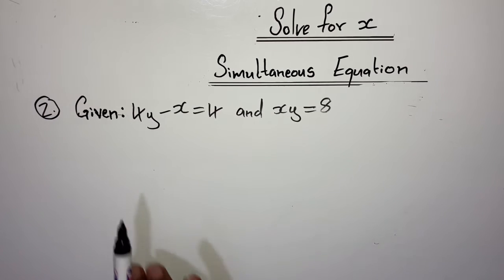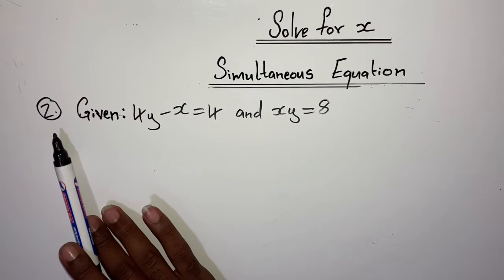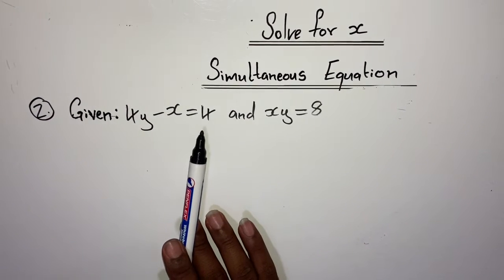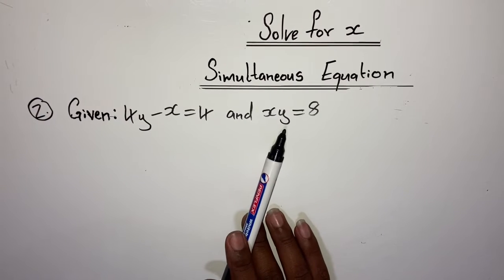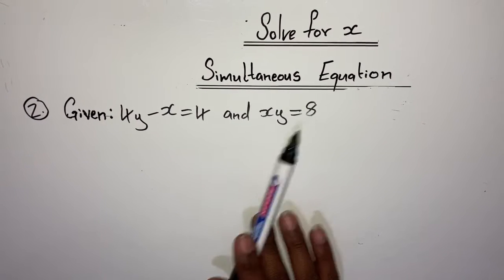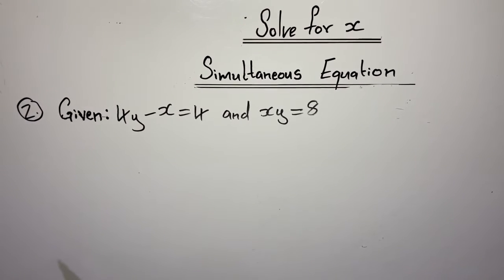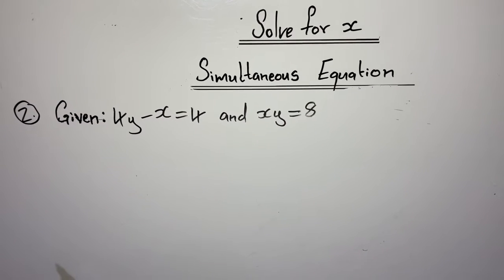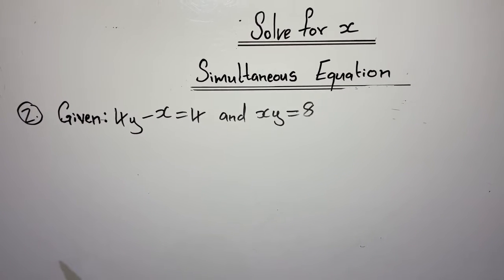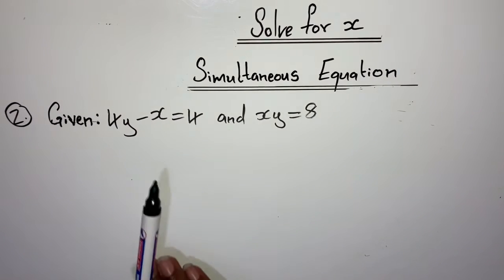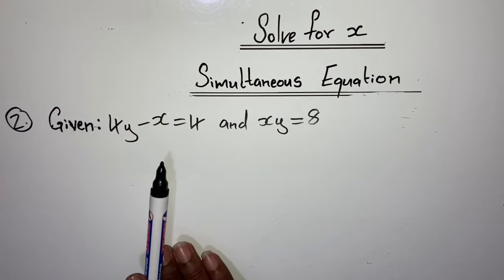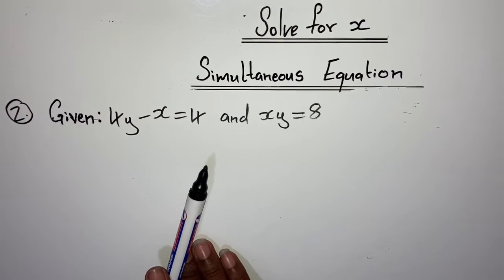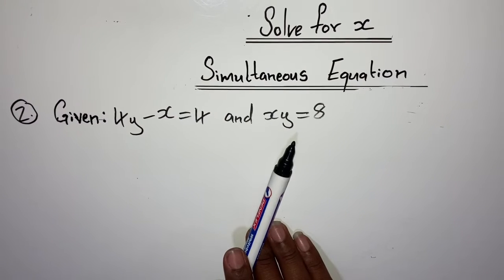Multiplying out: y times 4y gives 4y squared; y times negative 4 gives minus 4y; minus 8, equated to 0. From here you can divide by 4 throughout. So: 4y squared minus 4y minus 8 = 0, divide by 4, giving y squared minus y minus 2 equals 0. Then you go on to factorize and find your y values.